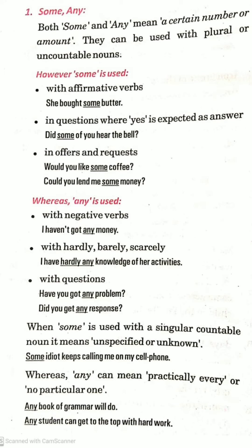That's how we use 'some' and 'any.' Memorize this and it will be very easy for you to know where to use 'some' and where to use 'any.' When 'some' is used with a singular countable noun, it means unspecified or unknown. Like: 'Some idiot keeps calling me on my cell phone.' Here, we use 'some' because we don't know who the person is — they are unspecified.